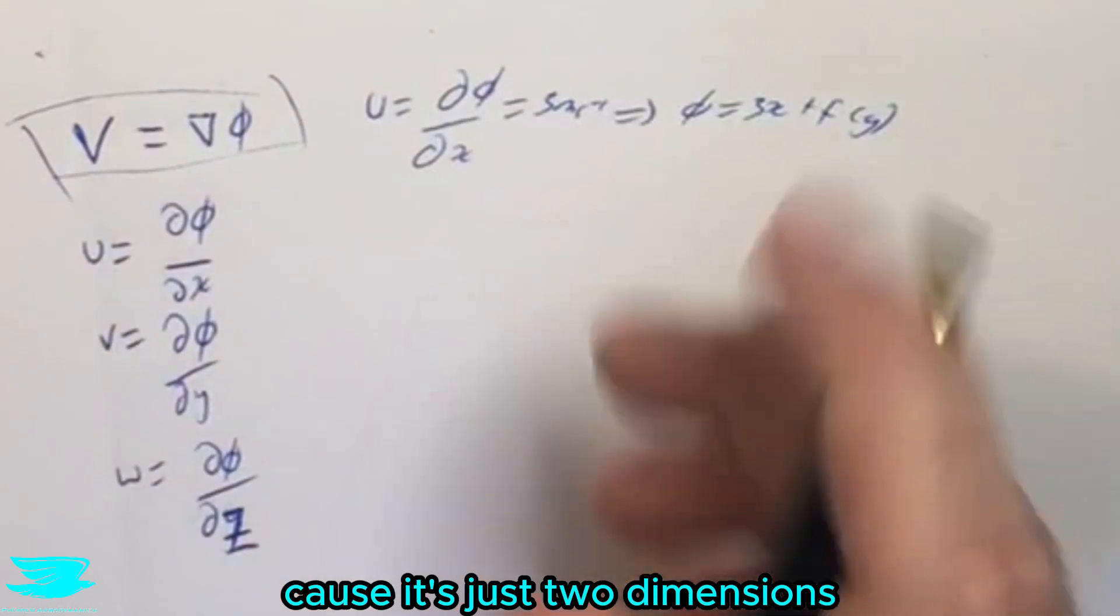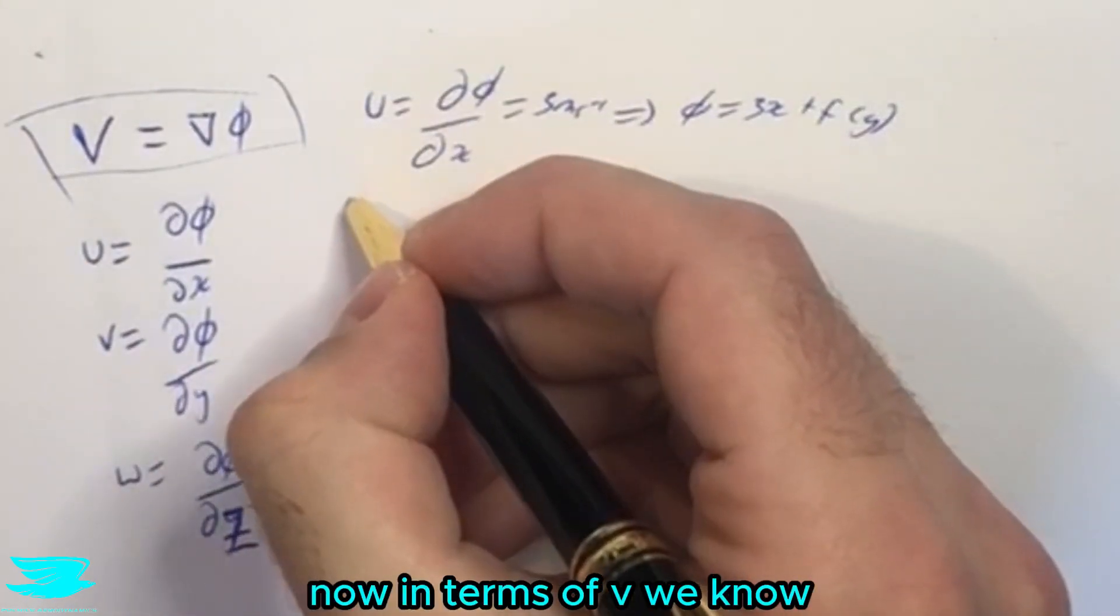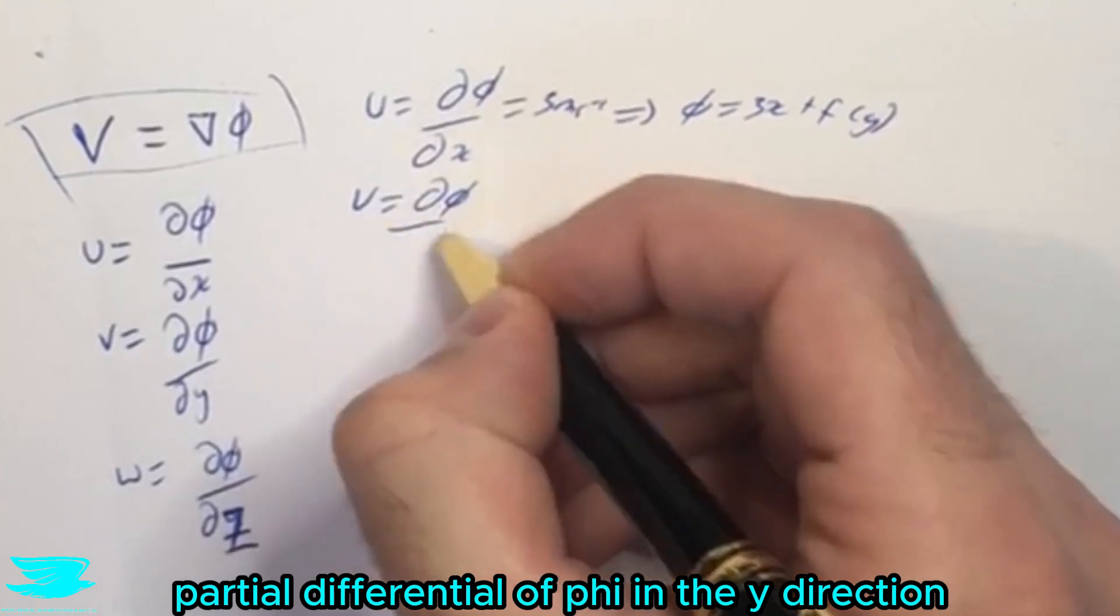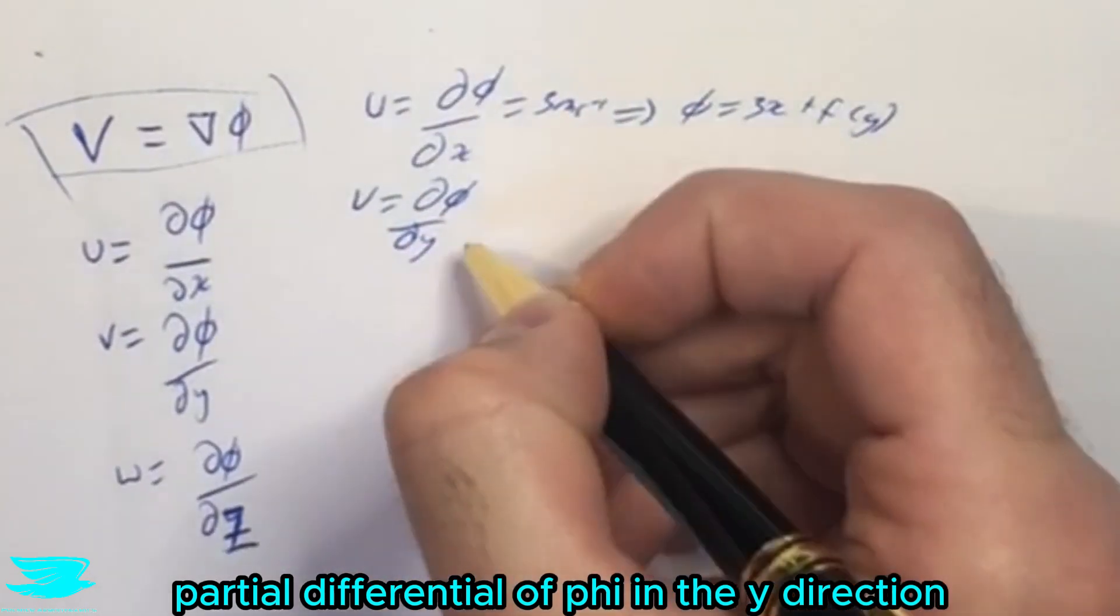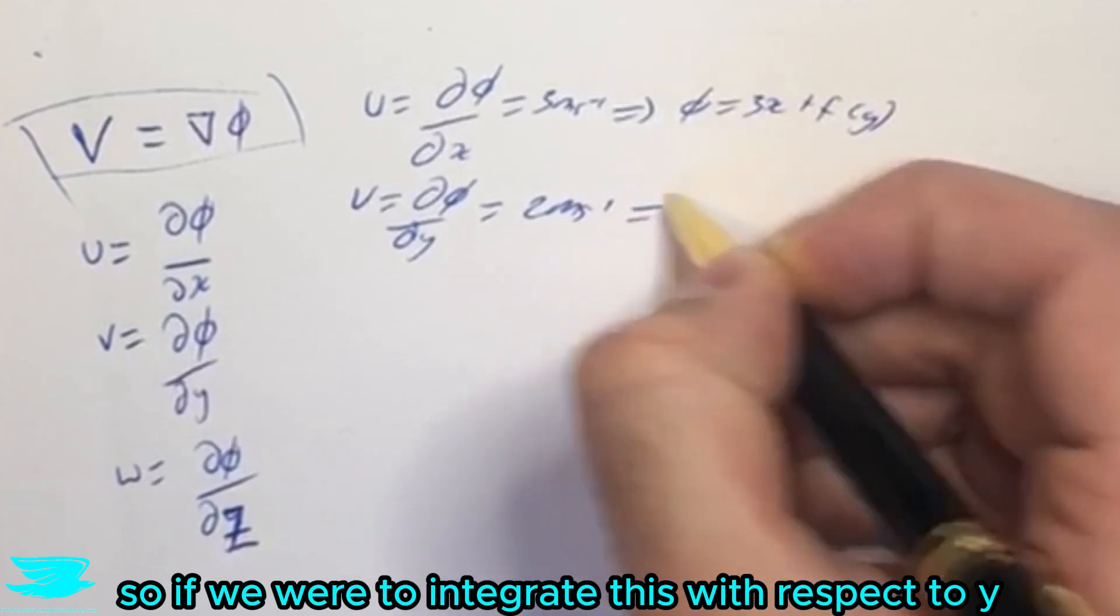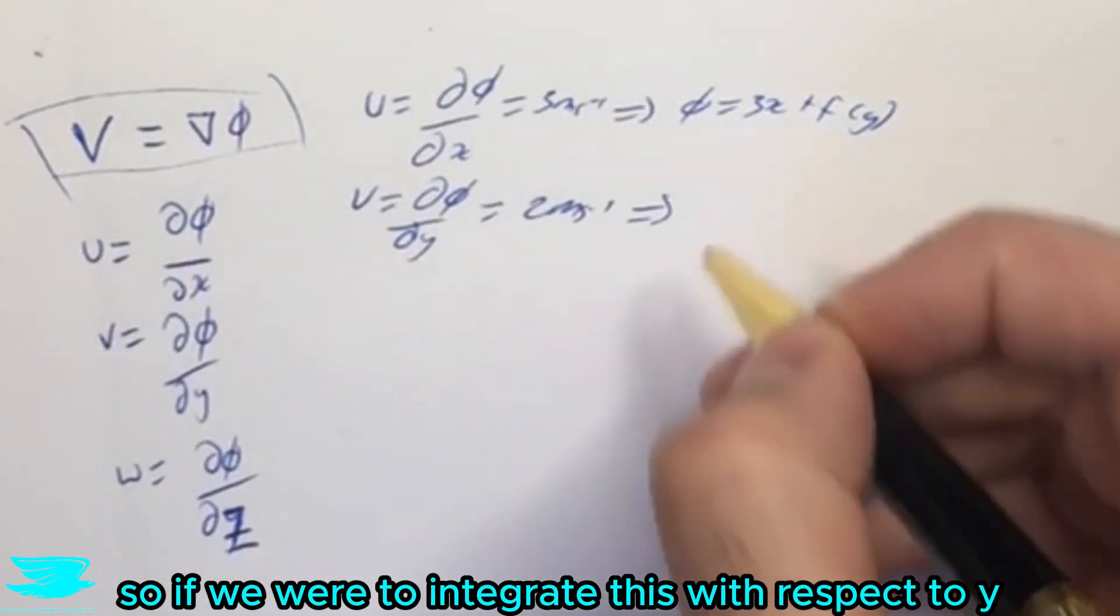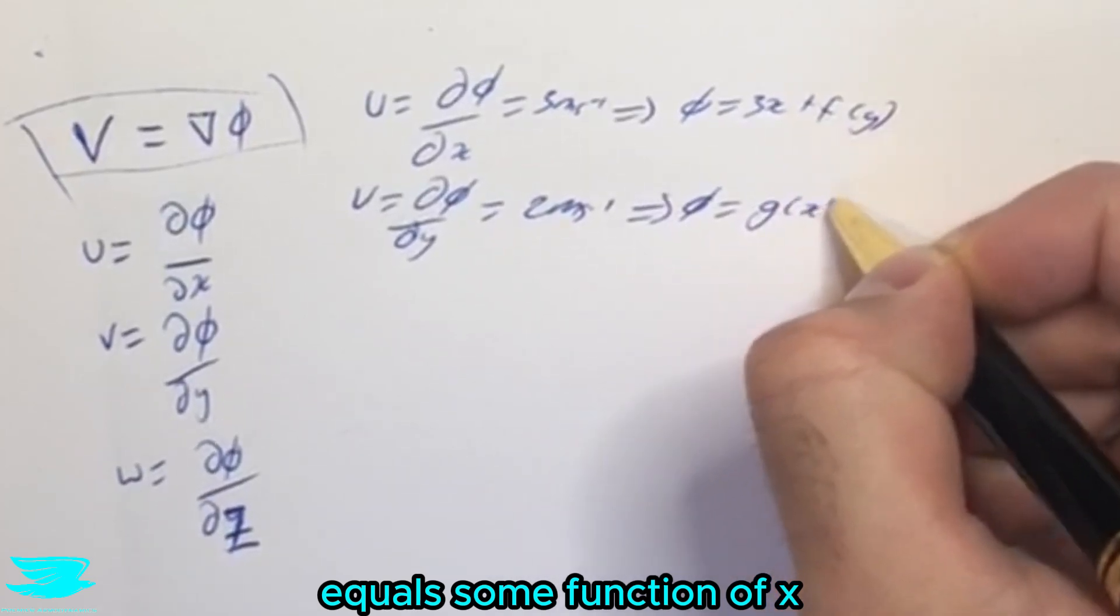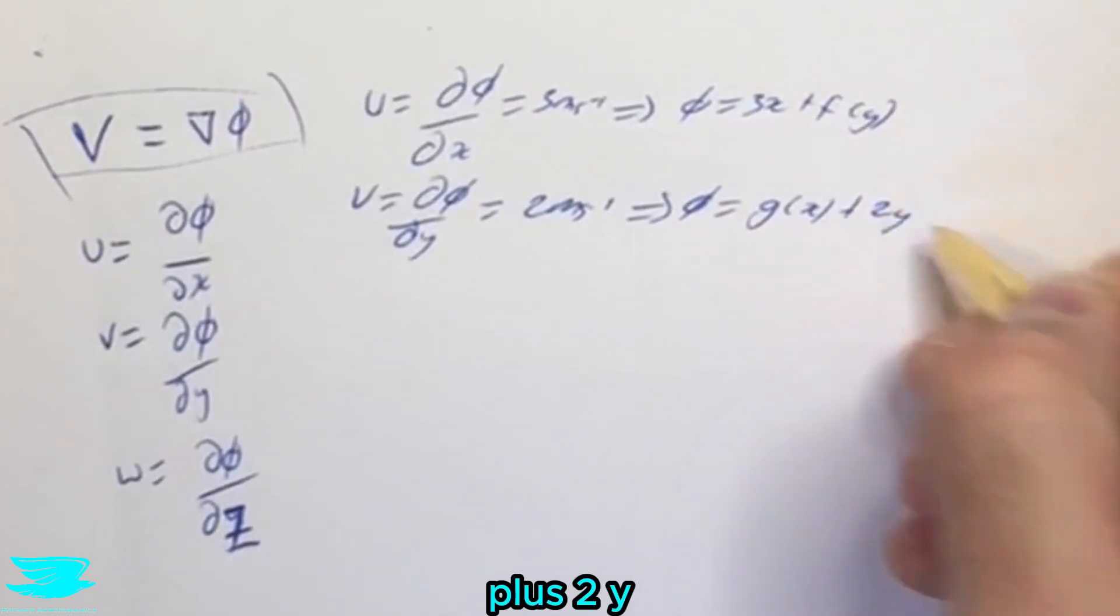Now in terms of v, we know v equals the partial differential of phi in the y direction and that equals two meters per second. So if we were to integrate this with respect to y we would then have phi equals some function of x plus 2y.